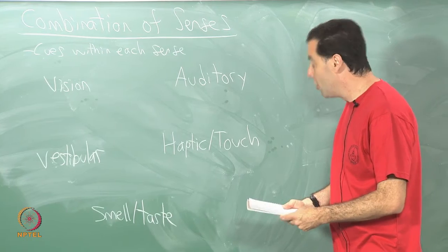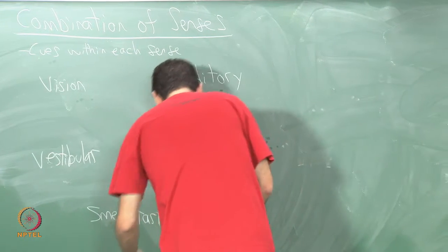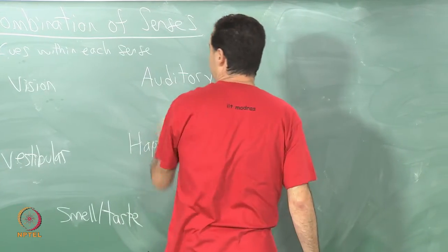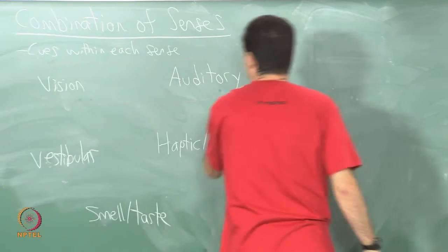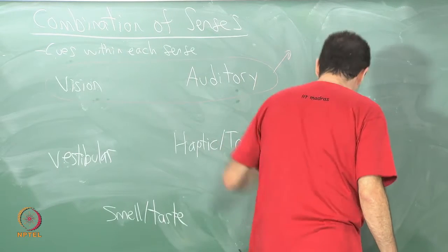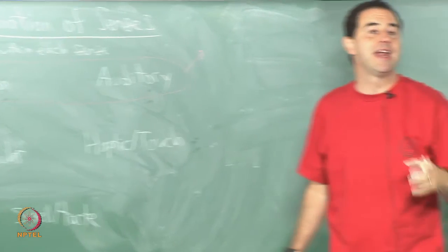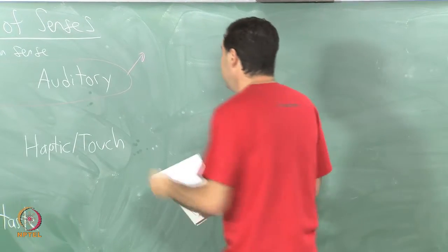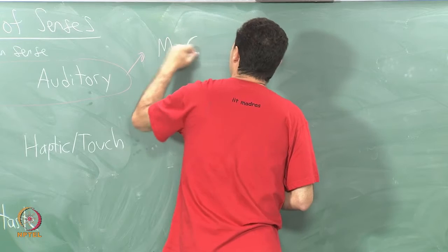There are interesting combinations here. For example, if I take auditory and vision and put these together, there is one very well known effect that helps explain how cues from each of these combine to give us perception and this is called the McGurk effect.